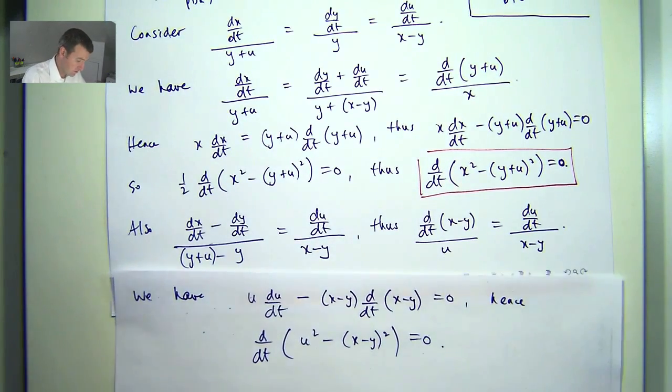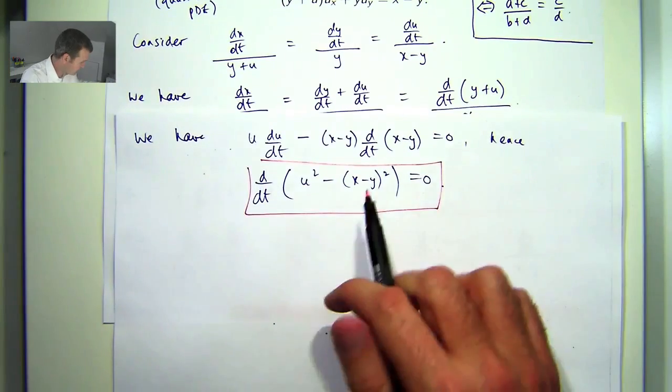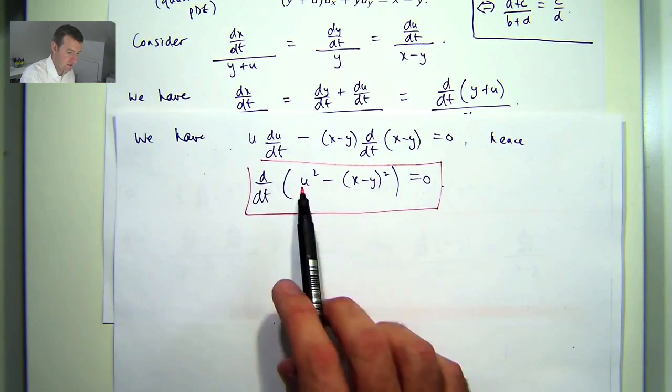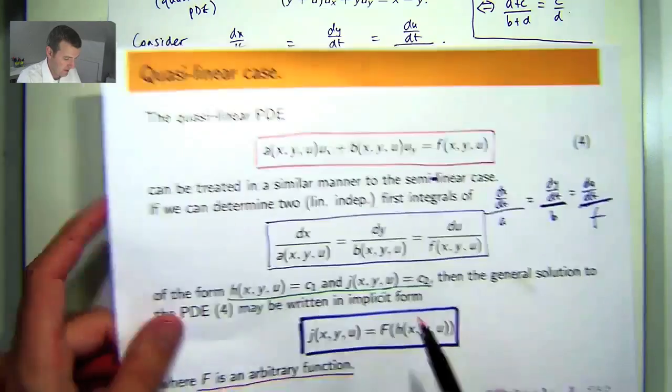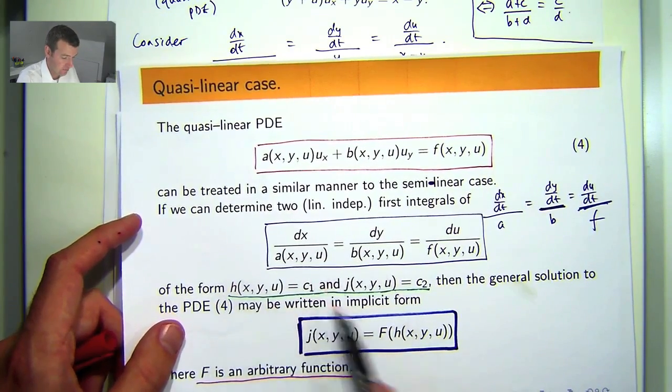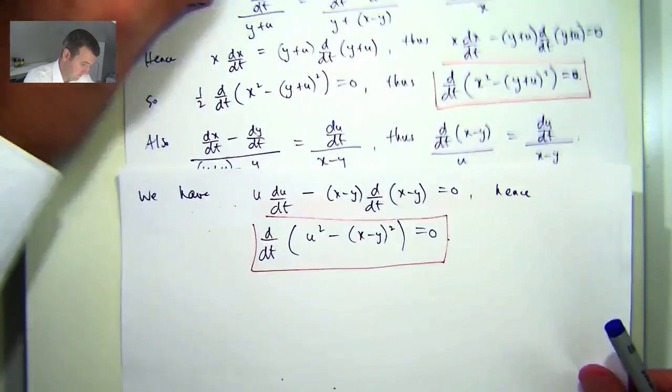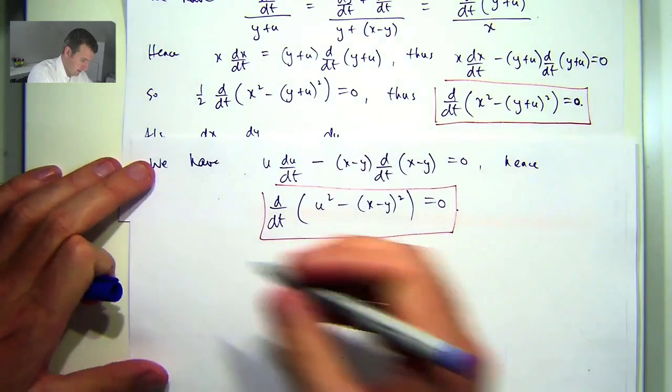So, now we're in a good position because we have come up with a second function of x, y, u whose derivative is zero. That means, again, I've got my second, just by integration, my second expression here. So, let's combine those two things and we're almost finished with our solution.